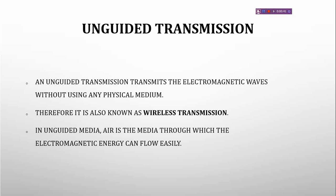First, what is unguided transmission? An unguided transmission transmits electromagnetic waves without using any physical medium. In guided transmission, the signals are transmitted through a physical medium like twisted pair, coaxial, or fiber. But in unguided transmission, the electromagnetic wave travels without any physical medium.